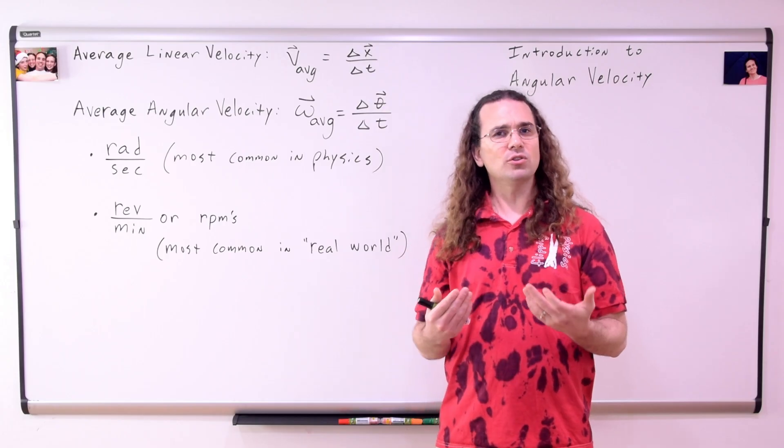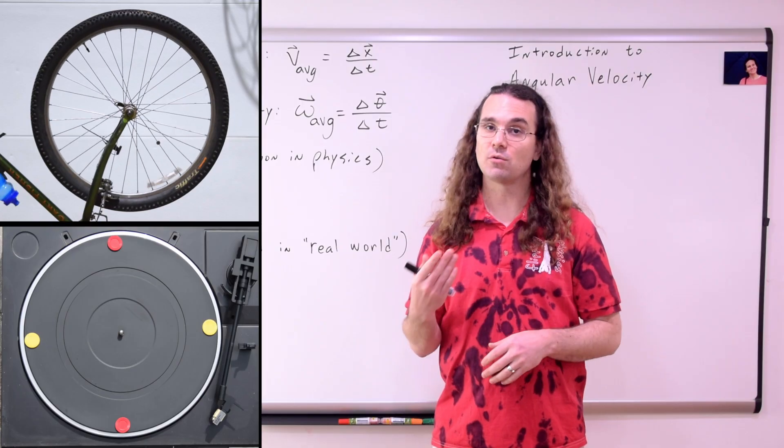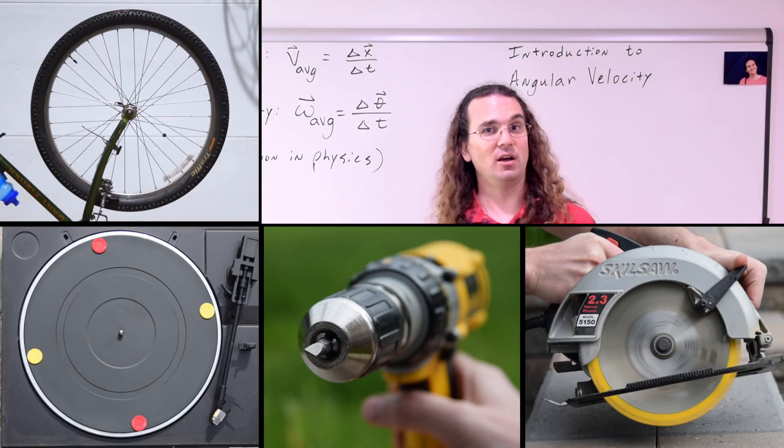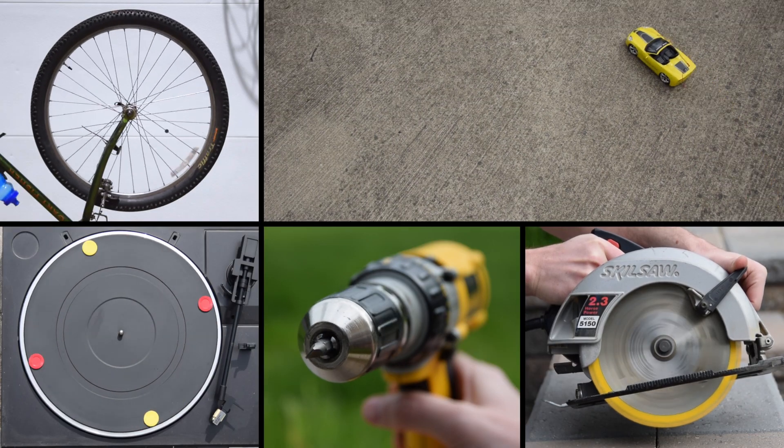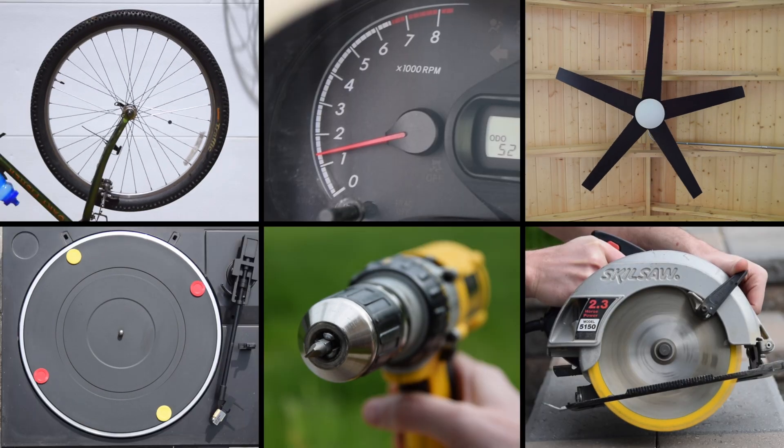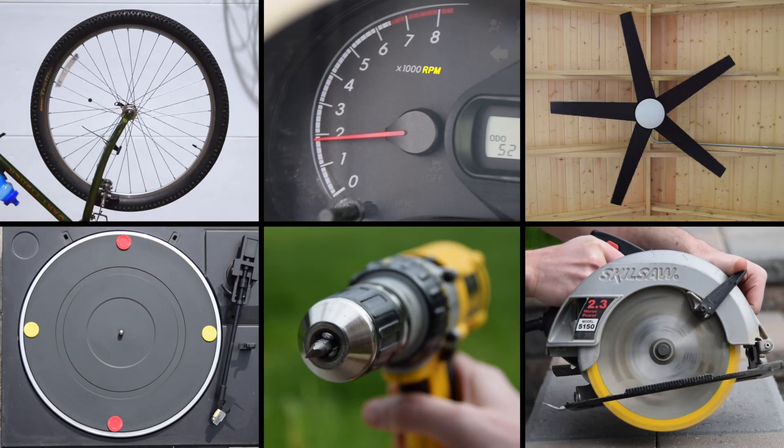There are all sorts of objects which can have angular velocity. A bike tire, a record player, a power drill, a circular saw, a turning car, a ceiling fan. Even the engine of a car rotates with an angular velocity and that is typically measured in revolutions per minute.